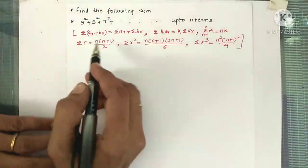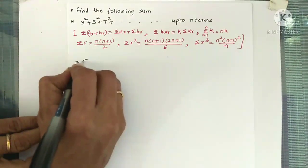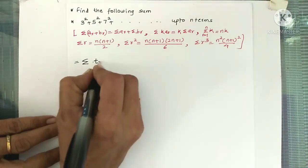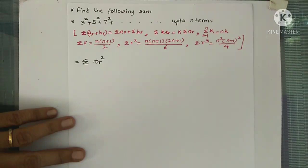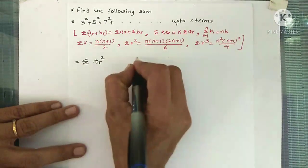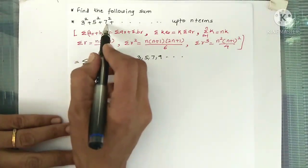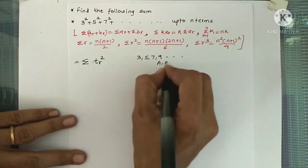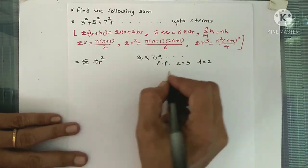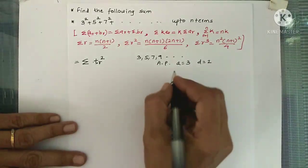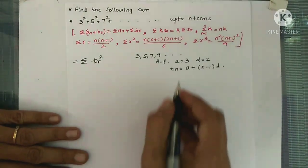Now let's solve Question 1. We want to write this sum as summation of the rth term. Each term is a square of some number from the sequence 3, 5, 7, 9 — which is an AP with first term a=3 and common difference d=2.